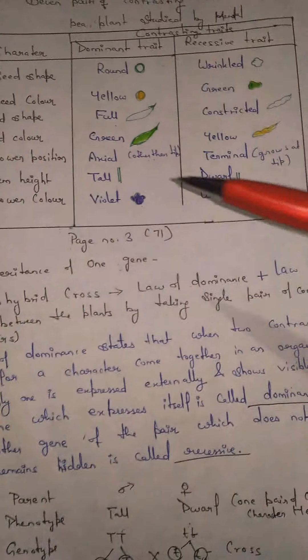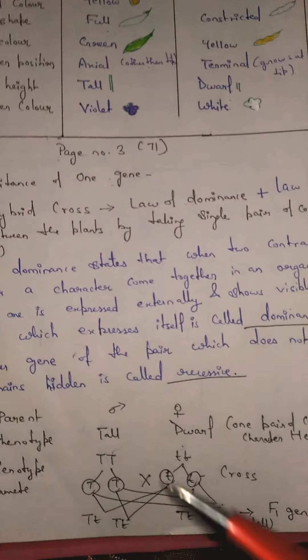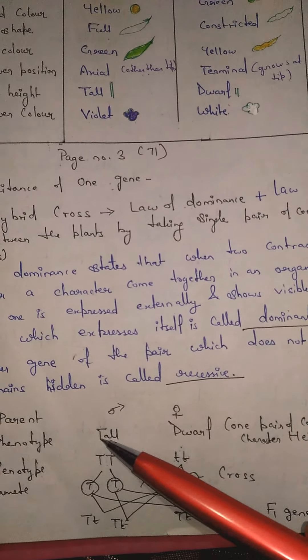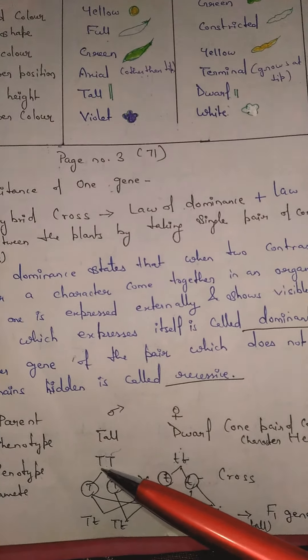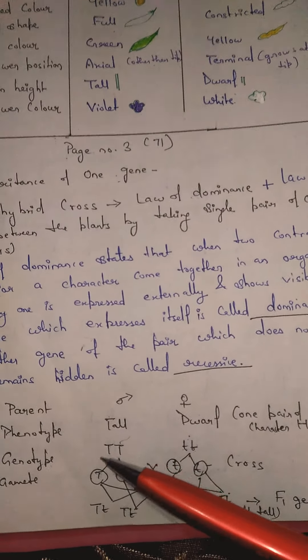Suppose we have tall as the dominant feature. The dominant feature is represented by the first alphabet. The first alphabet is T. We have taken T for representing the gene. We will write this T in capital - capital T. How many times do we write this T? Two times.